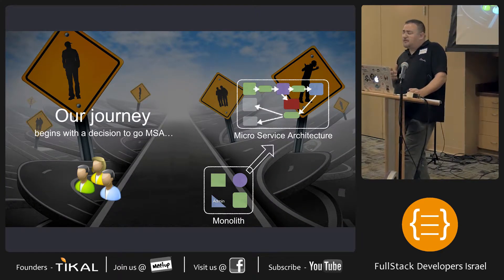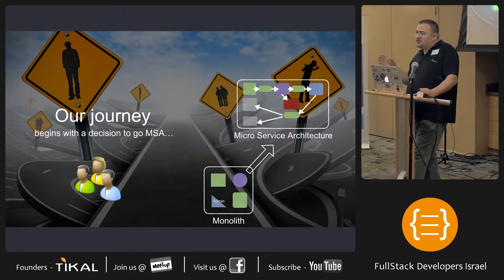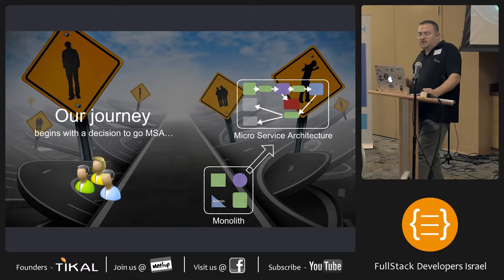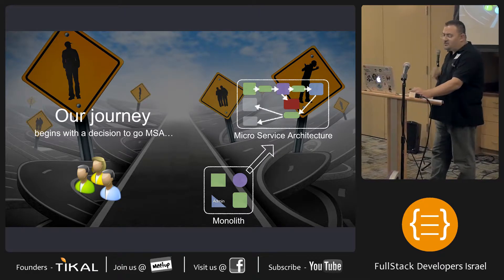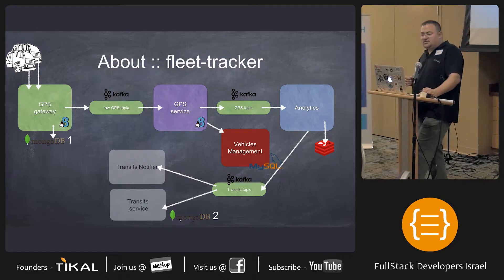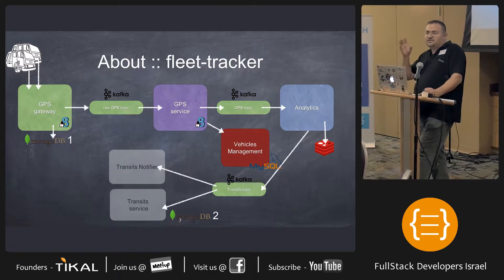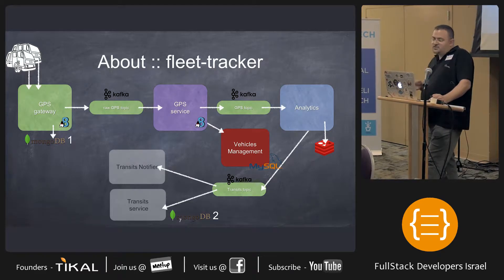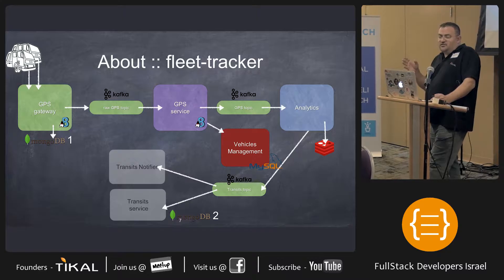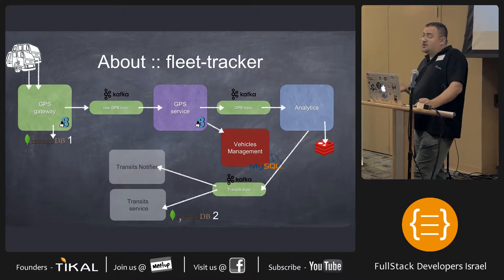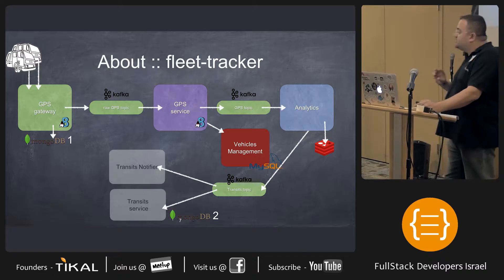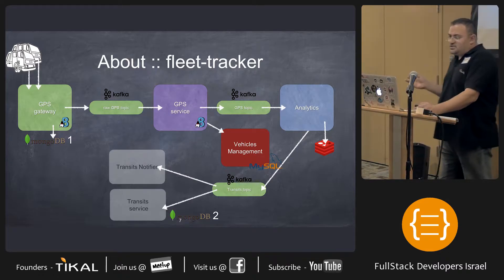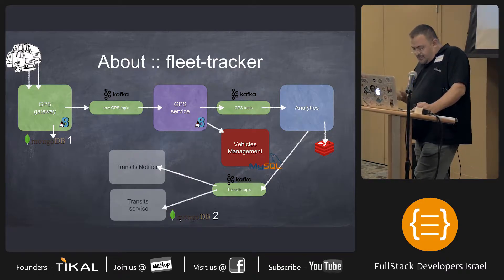Our journey starts by taking this monolithic application into a microservice. To recap what this service does: we have a fleet tracker application which tracks GPS coordinates coming from a fleet of vehicles, going into the GPS service. The GPS service has a persistence layer of Mongo, and whatever it processes it also puts into a message bus — a topic via Kafka.